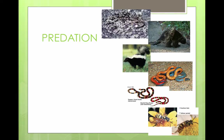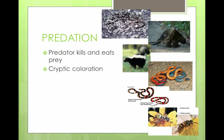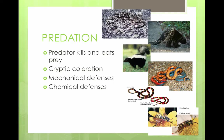Predation is when predators kill and eat their prey. Adaptations in predators and prey have evolved to advance these relationships. Cryptic coloration is camouflage. Mechanical defenses include things like quills on a porcupine. Chemical defenses can include things like skunk spray, poison frogs, or venom from a snake.